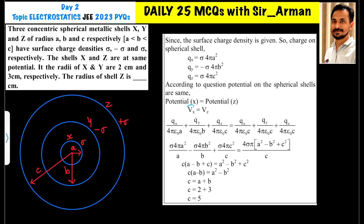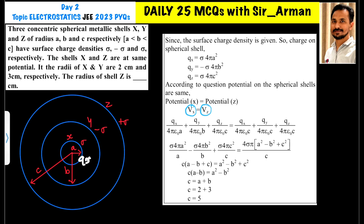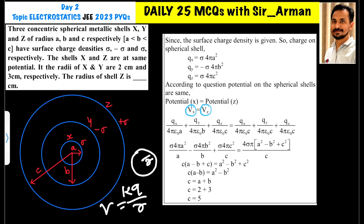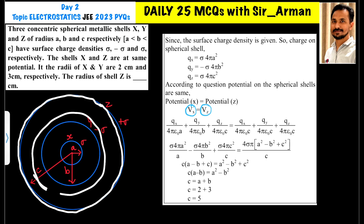As per the given condition, the potential on the surface of X equals the potential on the surface of Z. Shell X is inside shells Y and Z, so the potential on the surface of X is due to three contributions: the charge Q_x on shell X, the charge Q_y on shell Y, and the charge Q_z on shell Z. For a shell of radius r, the potential on its surface is kQ/r, and this remains constant from the center to the surface.